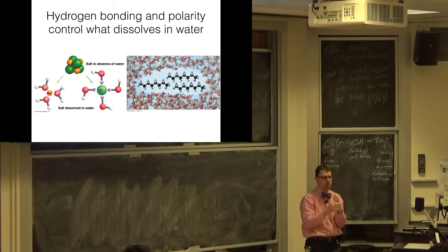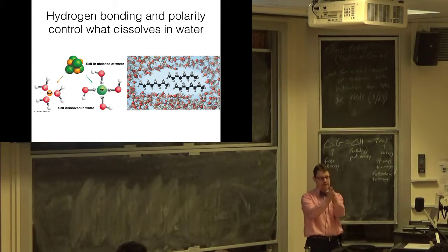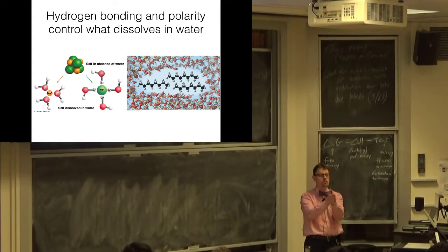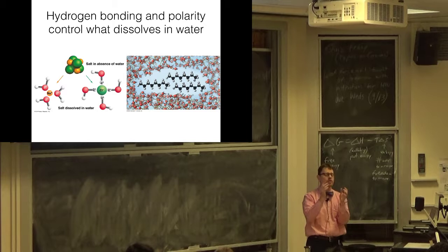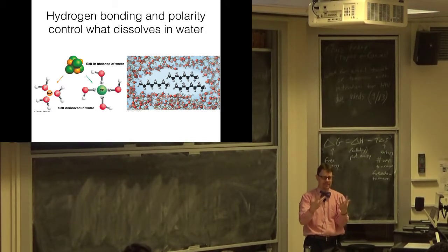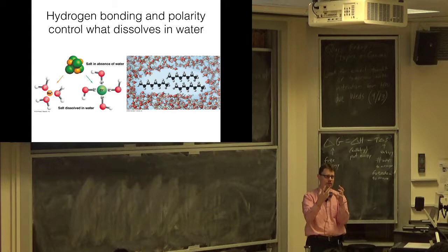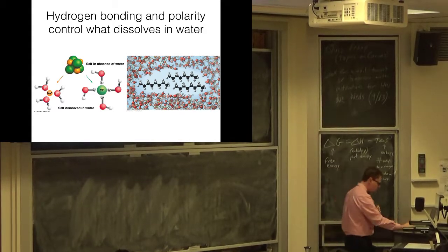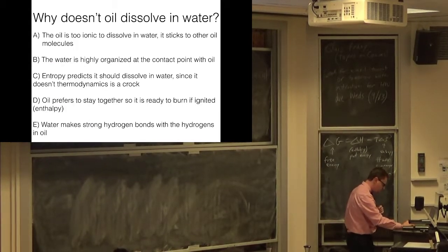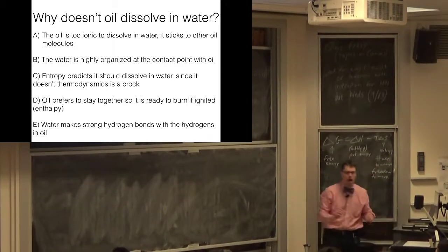Water molecules that are surrounded by other water molecules or polar substances like ethanol — which has an OH group — have more entropy because they can move around freely. The water molecules that are surrounded by other polar substances can continue to trade partners and move freely, maintaining their entropy.